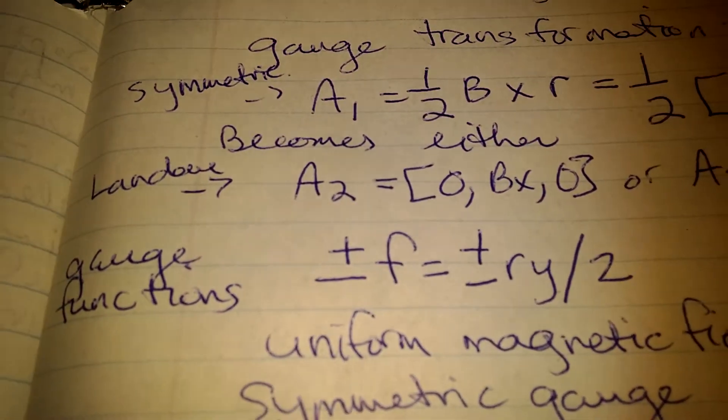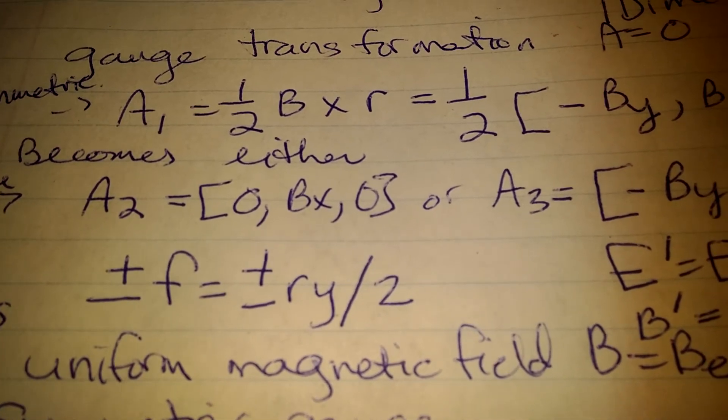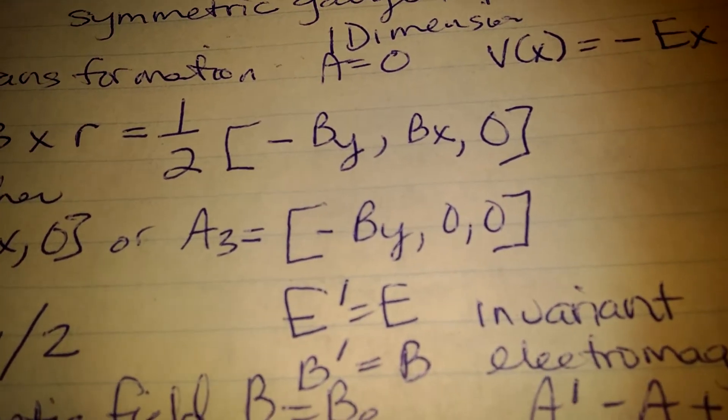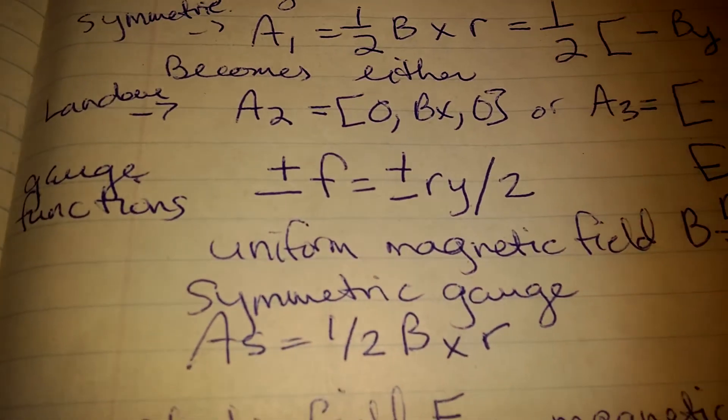And then you have becomes either a Landau, which is a2 equals 0, comma, bx, comma, 0, or a3 equals, and then brackets, minus by, comma, 0, 0.